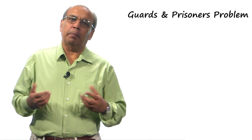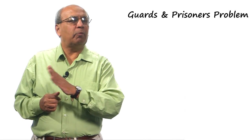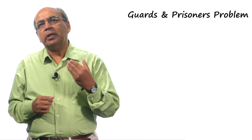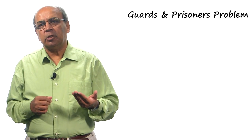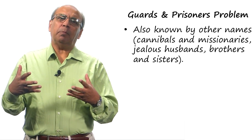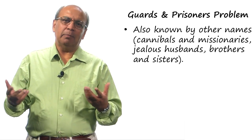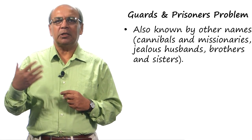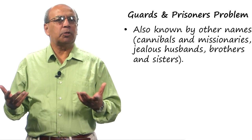Let us now look at a different problem, not the two by one matrix problem, but a problem called the guards and prisoners problem. This problem goes by many names: the cannibals and missionaries problem, the jealous husbands problem, and so on.